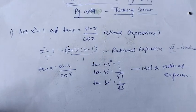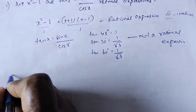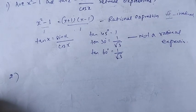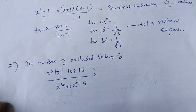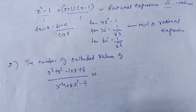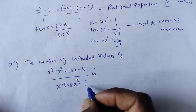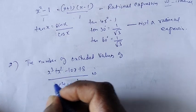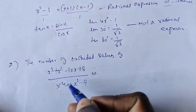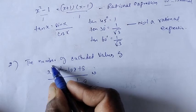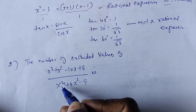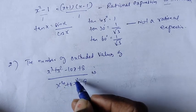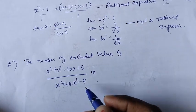Next, the second problem: find the number of excluded values of x cubed plus x squared minus 10x plus 8 divided by x power 4 plus 8x squared minus 9. The excluded values come from the denominator.